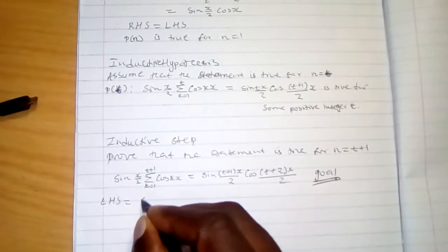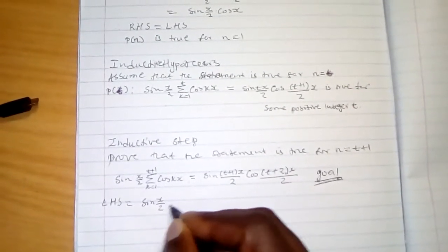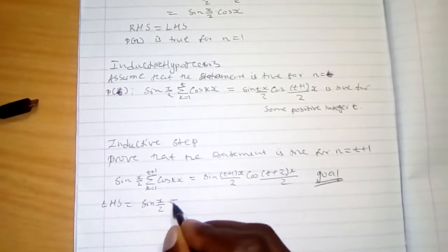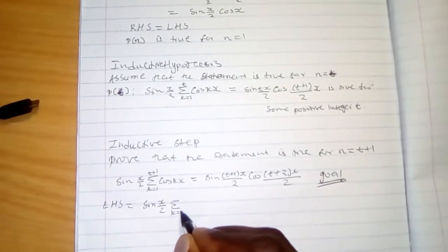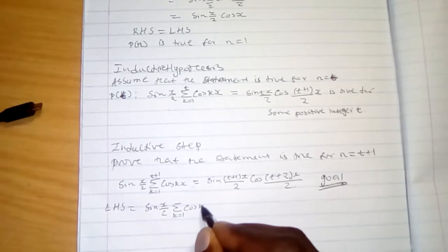The left-hand side is sine x over 2, the summation of k is equal to 1 cos kx.